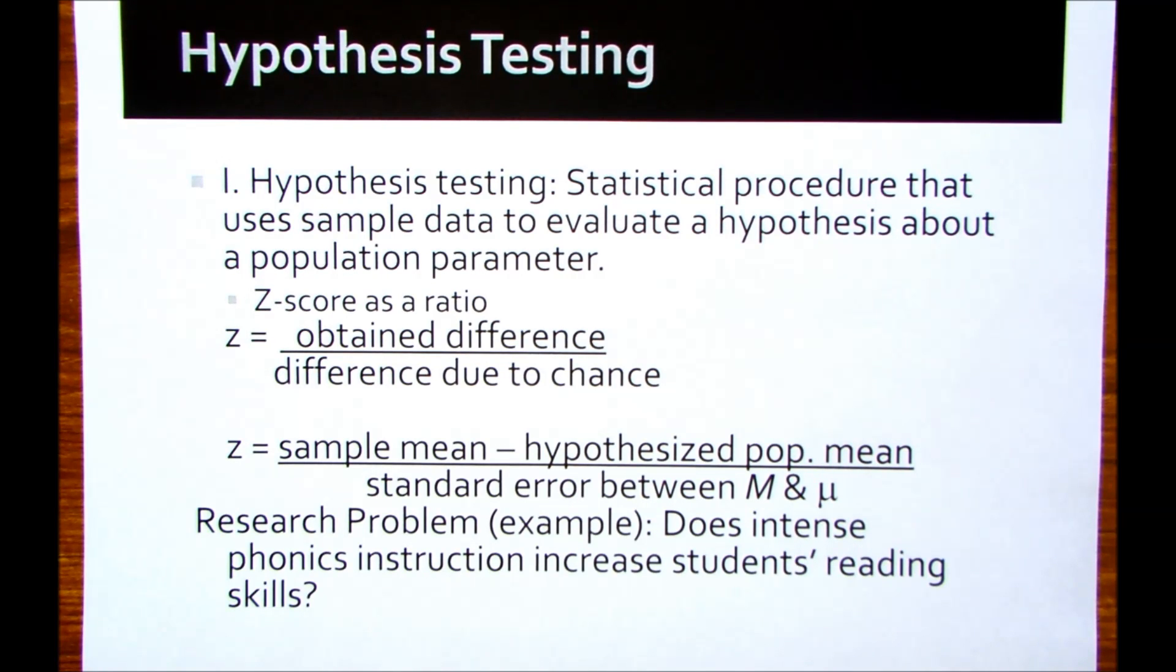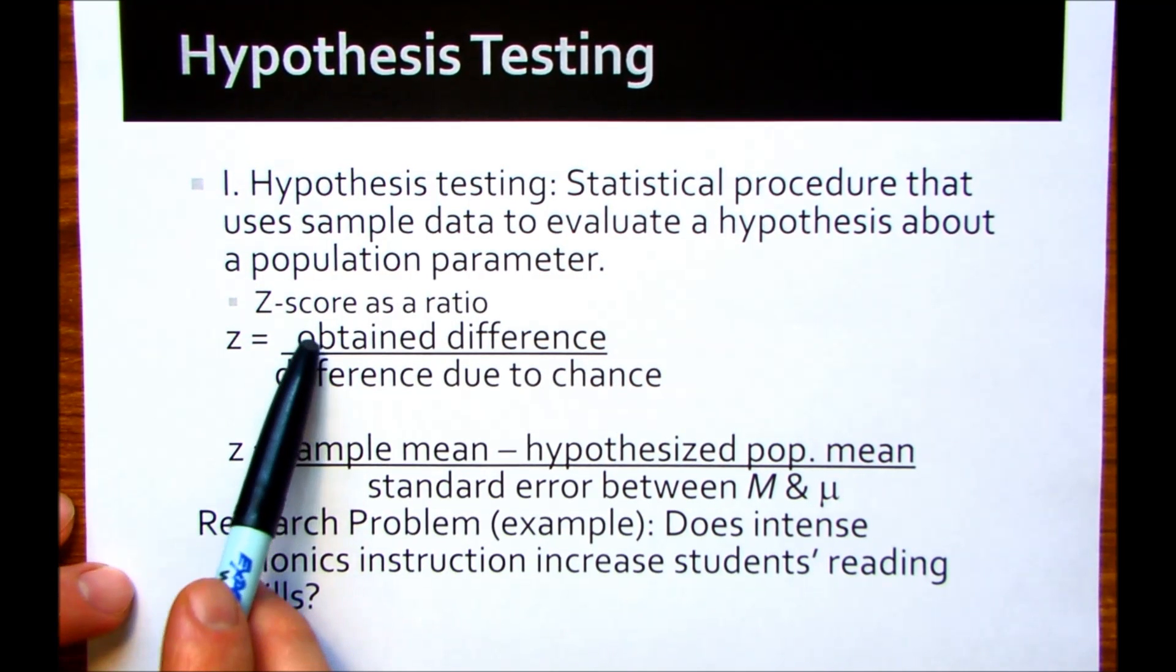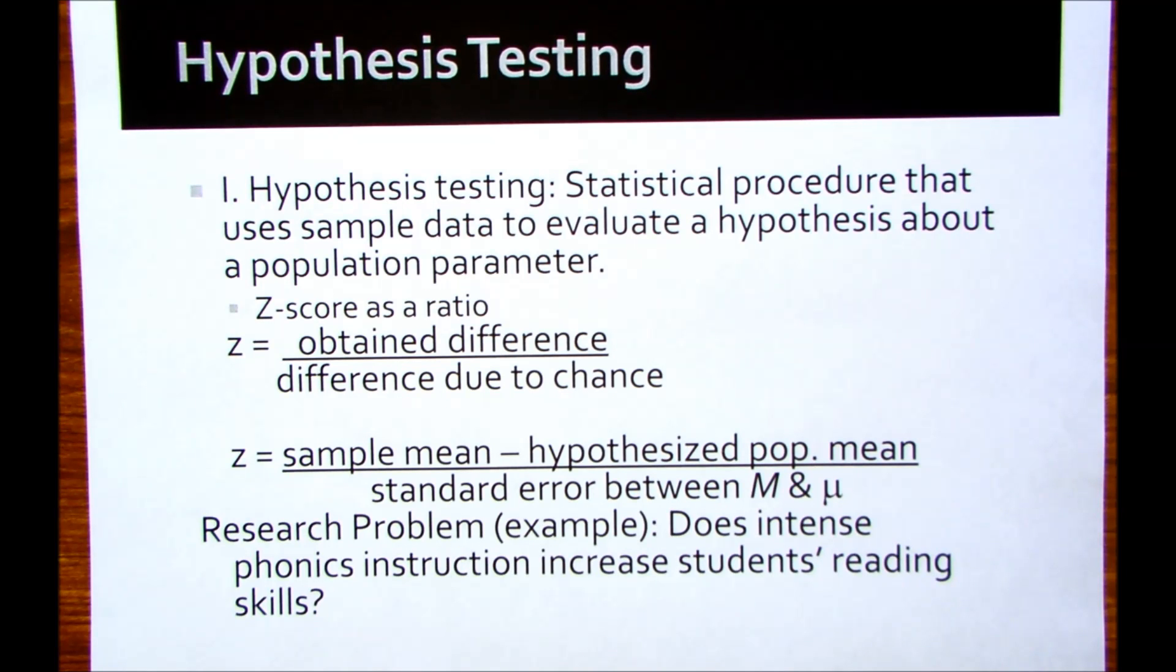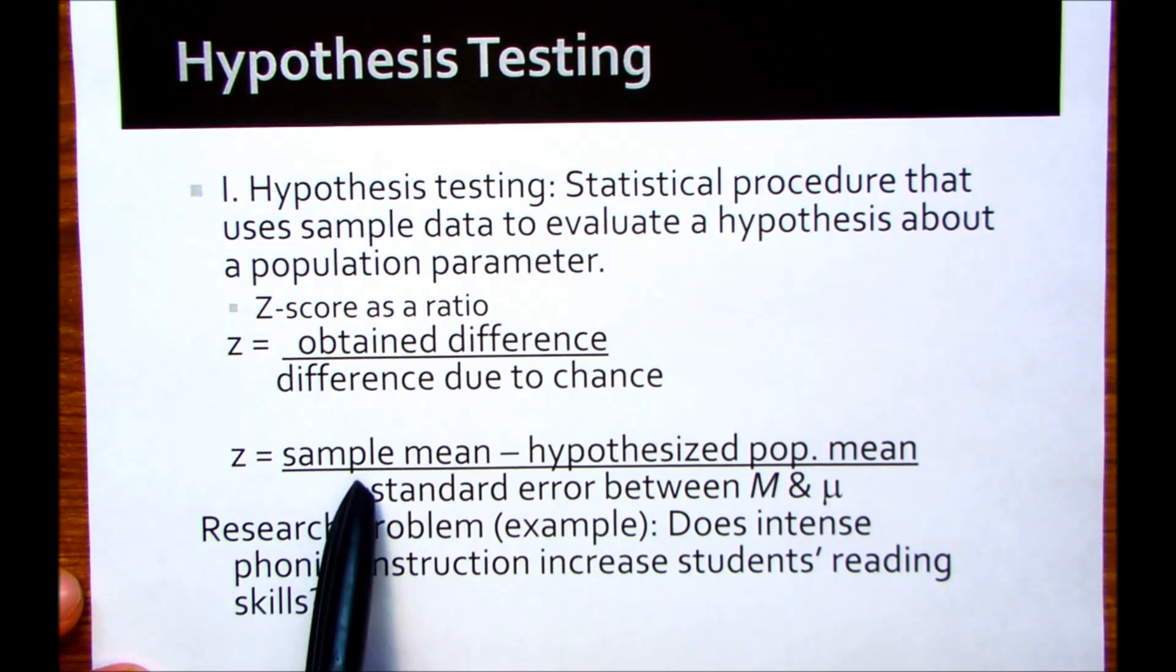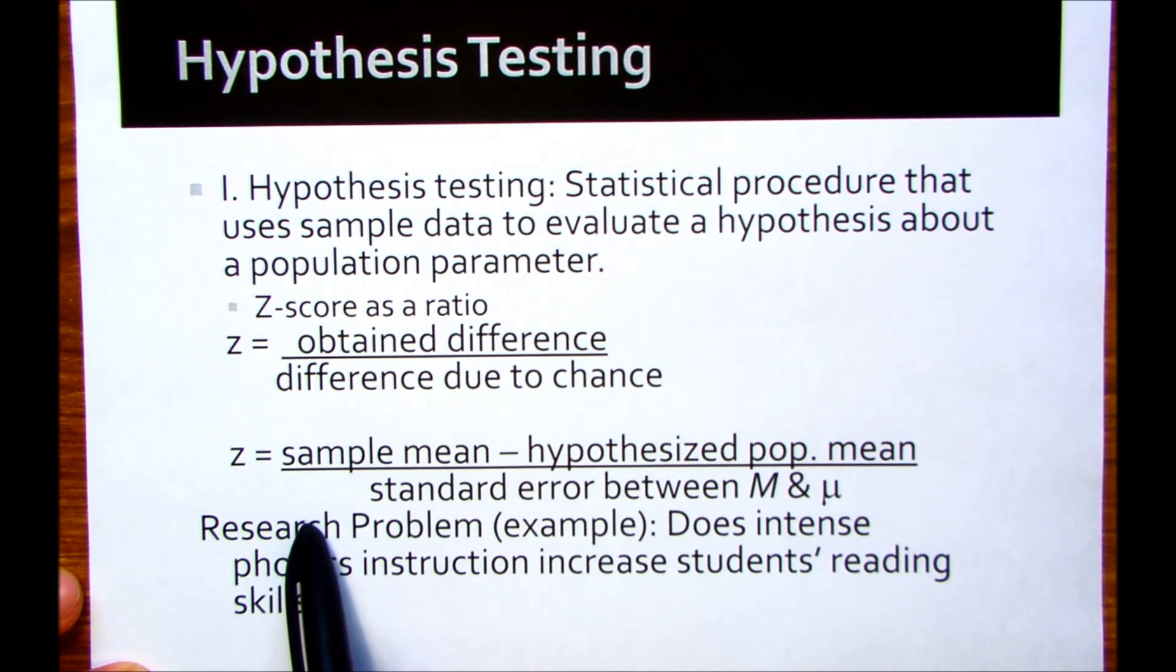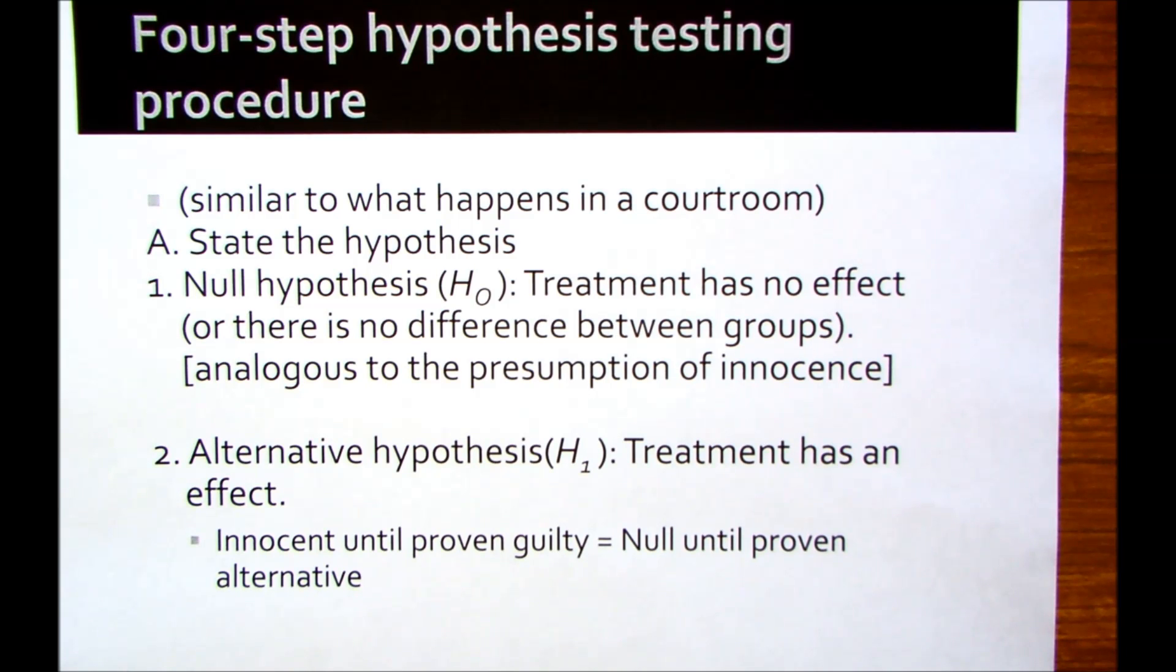This session is going to be on hypothesis testing, and I'm going to take you through the basic four-step procedure for hypothesis testing. So you see here our definition for hypothesis testing, a statistical procedure that uses sample data to evaluate a hypothesis about a population parameter. And so for this example, we're going to still use that z-score that we worked at for a group.